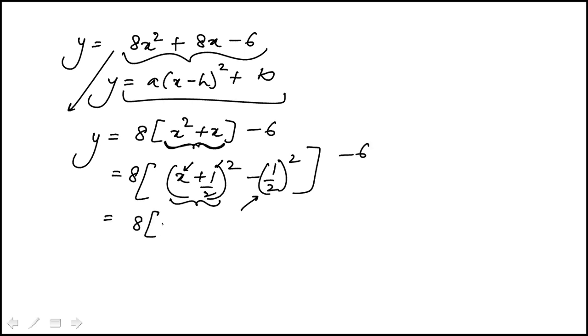So that becomes 8 times x plus half squared. I'm going to multiply 8 with this. This is minus one-fourth. So 8 times minus one-fourth is minus 2, minus 6.